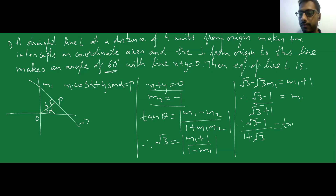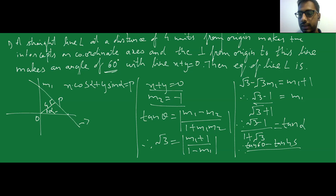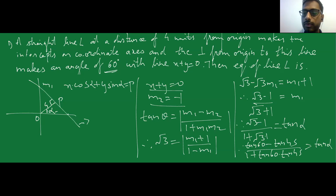The slope M equals (√3 − 1) / (1 + √3), which equals tan(α). Rewriting: √3 is tan(60°) and 1 is tan(45°), so this matches the formula for tan(A) − tan(B) / (1 + tan(A)·tan(B)) = tan(A − B). This gives tan(60° − 45°) = tan(15°). Therefore, alpha equals 15 degrees.